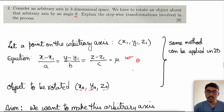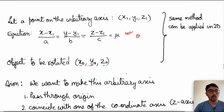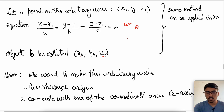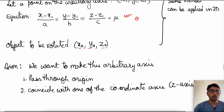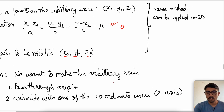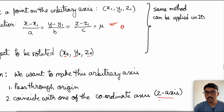This same problem can be asked in 2D as well, and the process shown here will be exactly followed in 2D — the only change is that we will not have the z term. What we are going to do is make this arbitrary axis pass through the origin, which we can do by translation. Then we want it to coincide with one of the coordinate axes. After translating the 3D line to pass through the origin, we rotate it to align with a coordinate axis — in our case, the z axis, though you can use any other axis.